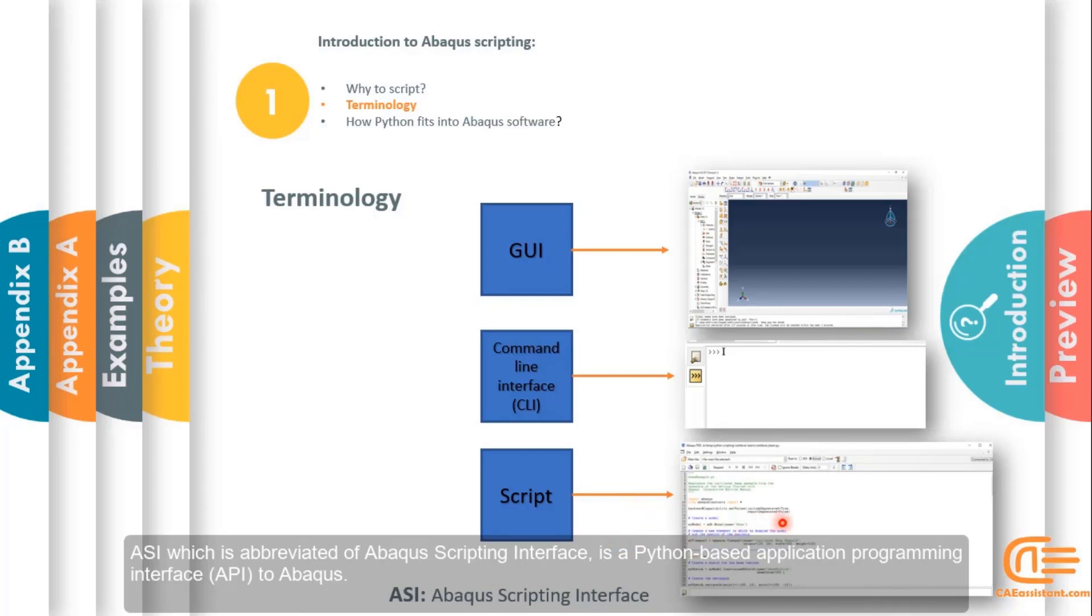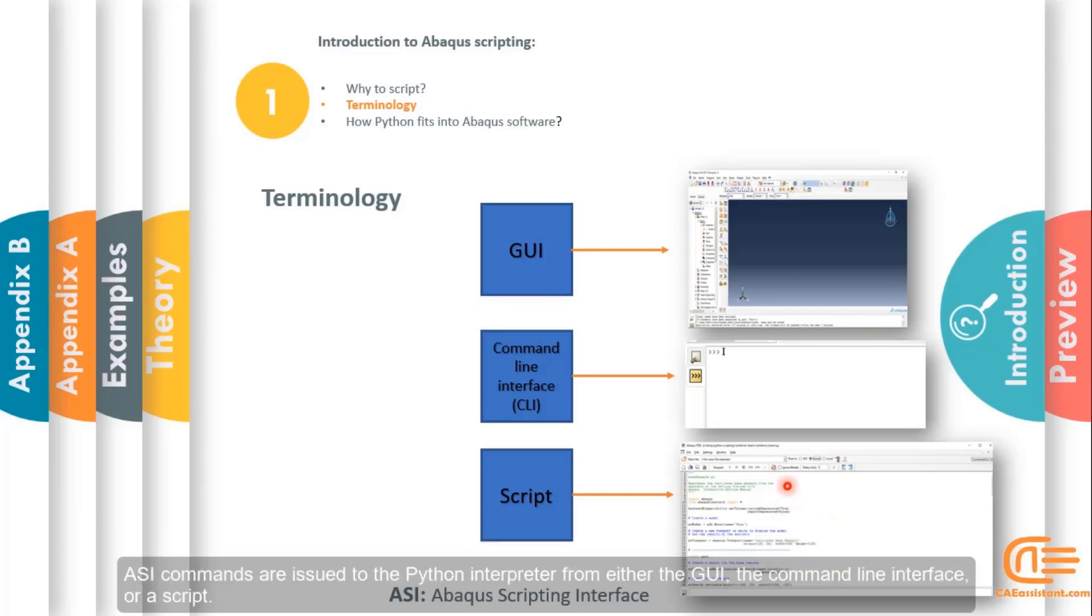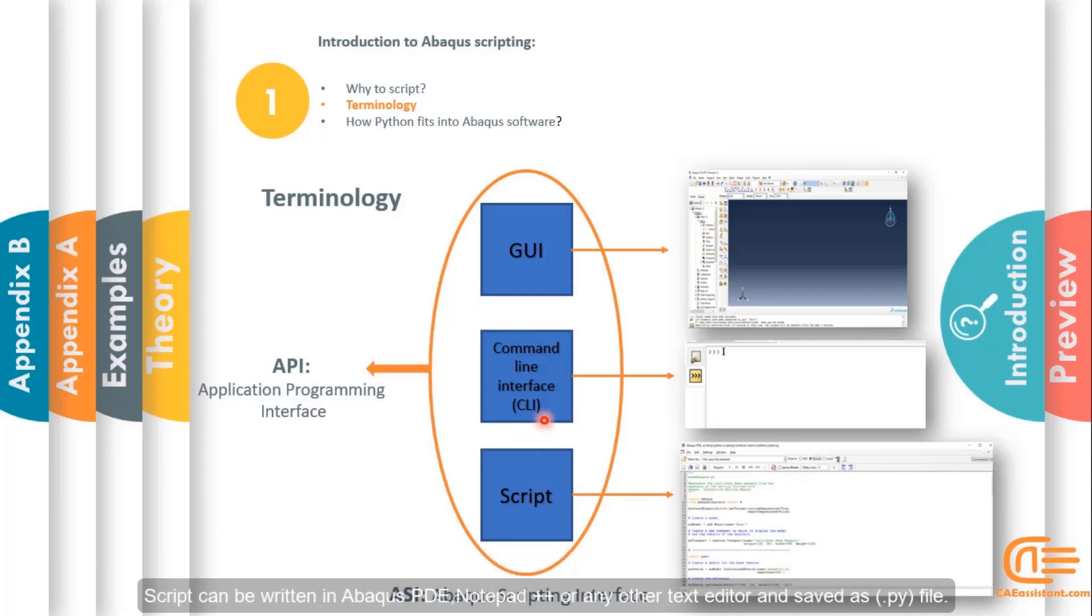Script is a file included set of programming code. ASI, which is abbreviated from Abacus scripting interface, is a Python-based application programming interface API to Abacus. ASI commands are issued to the Python interpreter from either the GUI, the command line interface, or a script. Scripts can be written in Abacus PDE, Notepad++, or any other text editor and saved as .py file.